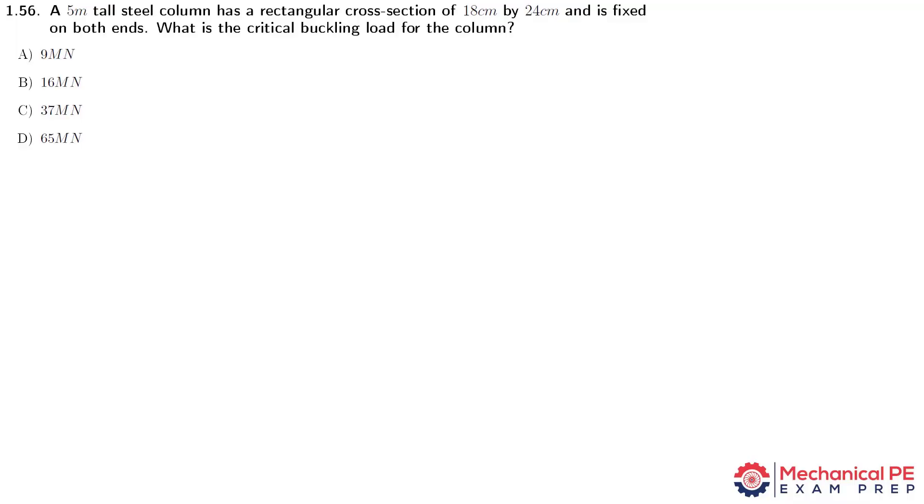A 5 meter tall steel column has a rectangular cross section of 18 centimeters by 24 centimeters and is fixed on both ends. What is the critical buckling load for the column?